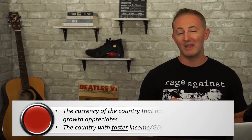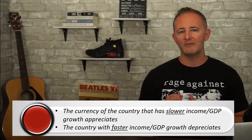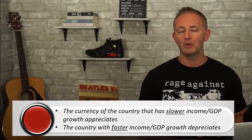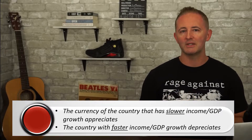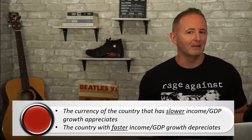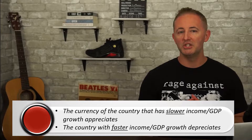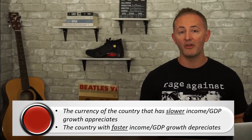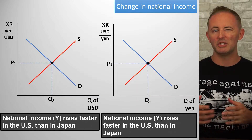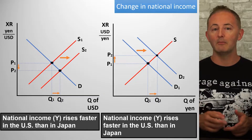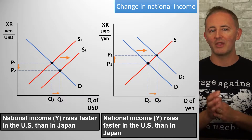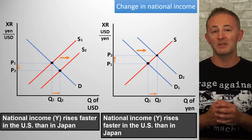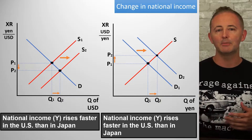Let's go through the other factors that affect the supply and demand for currencies on the foreign exchange market — remember that all of this represents relative changes. Next up is changes in national income or real GDP. The currency of the country that has slower income or GDP growth appreciates, while the country with faster income growth will see their currency depreciate. If a country's income is rising faster, its people can afford to buy more stuff, including more stuff from other countries. Let's say the U.S.'s GDP is rising faster than Japan's — Americans can afford to buy more Japanese-made stuff, so this will shift the demand for the yen to the right, causing the yen to appreciate. In turn, Americans will supply more U.S. dollars to the foreign exchange market, causing a depreciation of the dollar.